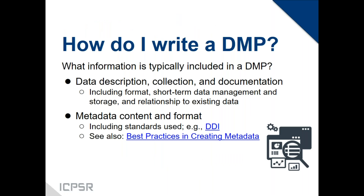Given the importance of a data management plan, how exactly do you write one and what information is typically included? You'll typically start by providing a description of the data and its collection. This includes a description of the nature and scale of the data to be produced — for example, whether your project will include experimental data, observational data, models or simulations, video or images, software programs, applications, etc. — and how, when, and where you plan to collect those data.